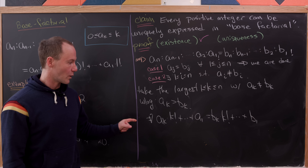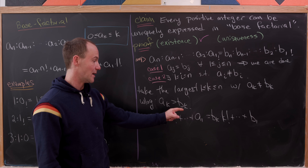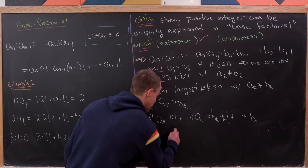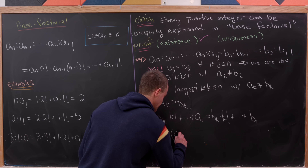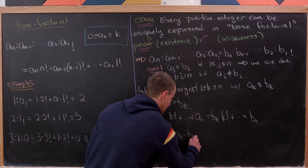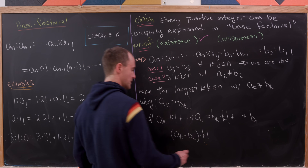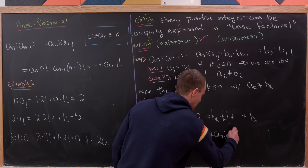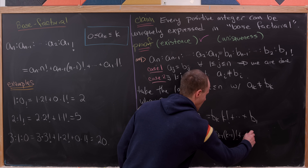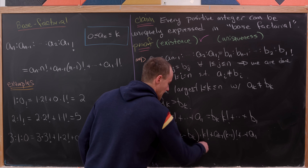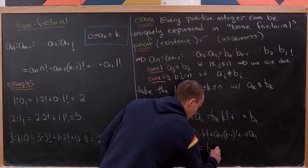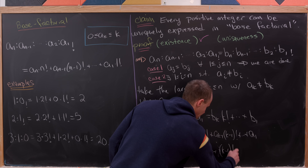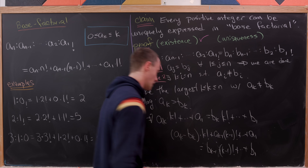Subtracting b_k times k! over to the left-hand side gives: (a_k − b_k) times k! plus a_{k-1} times (k−1)! plus all the way down to a_1 equals b_{k-1} times (k−1)! plus all the way down to b_1.